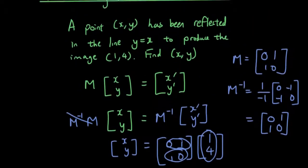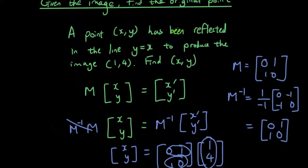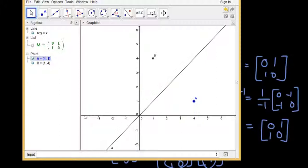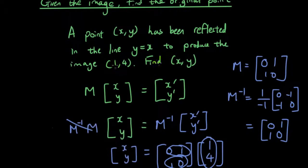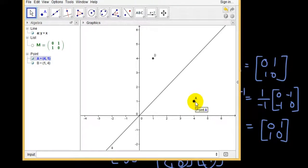So if you have a look at my GeoGebra diagram, we got the original point is A and the image is B. So B is 1, 4 which is stated in the question. And the original image was 4, 1.